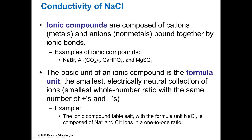Ionic compounds are going to be between a metal and a non-metal. The metals are going to be cations, which are positively charged, and the non-metals are going to be anions, which are negatively charged. They are held together by ionic bonds — really electrostatic forces — just like when you walk across the carpet and get shocked.